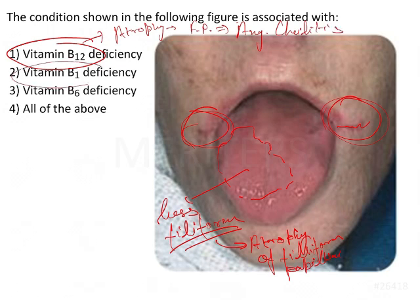Then we have option 2, that is vitamin B1 deficiency. Now this vitamin B1 deficiency, that is known as thiamine deficiency also, that is associated with the disease known as beriberi.